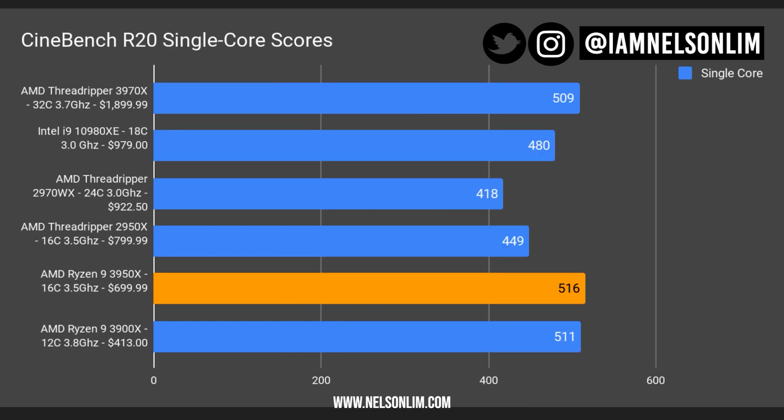Single-core performance measures how each core performs by itself, and I thought it would be interesting to include in the results. We can see that with the third-generation AMD chips, the single-core performances have largely improved. Surprisingly, it has even done better than the Intel i9-10980XE in terms of single-core performance — definitely a very interesting find.